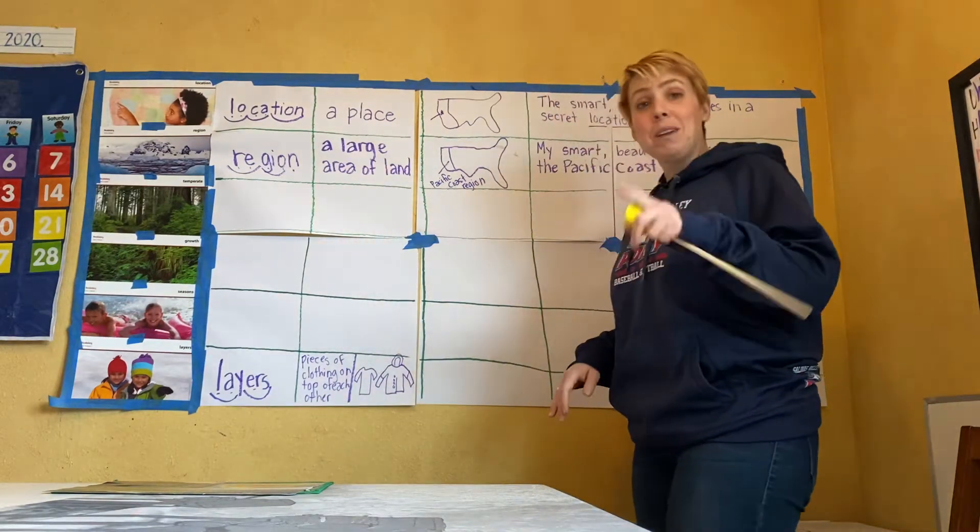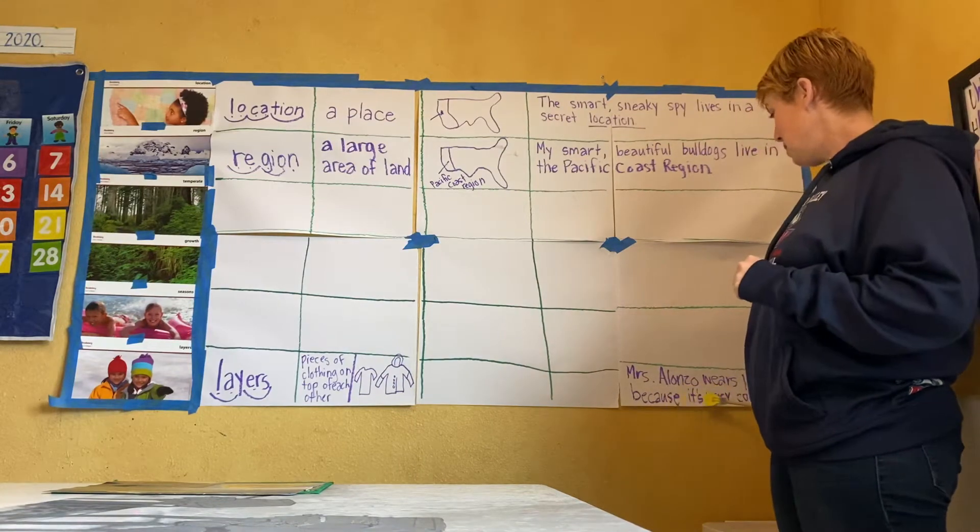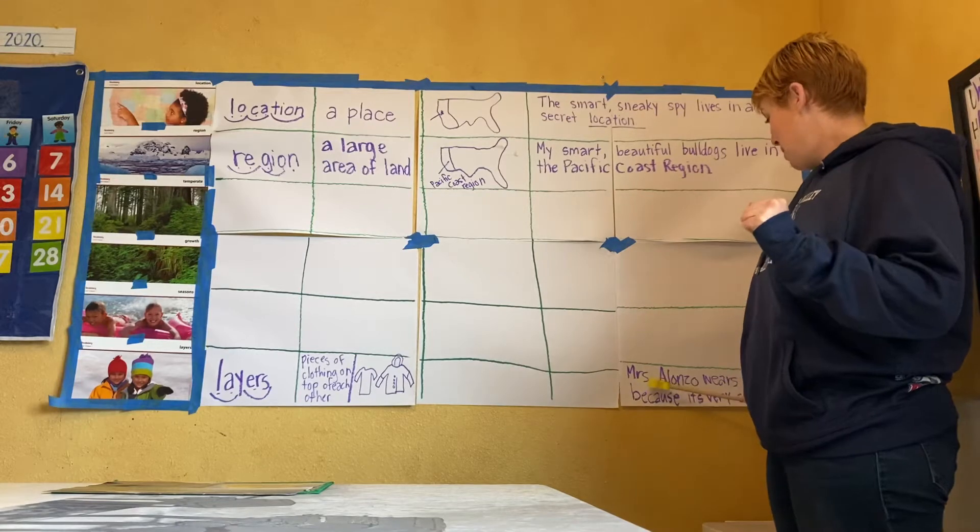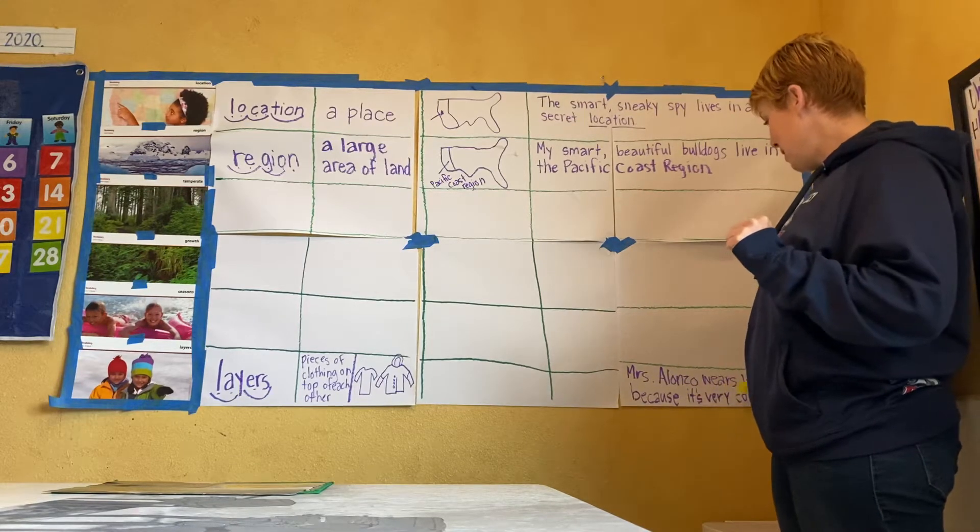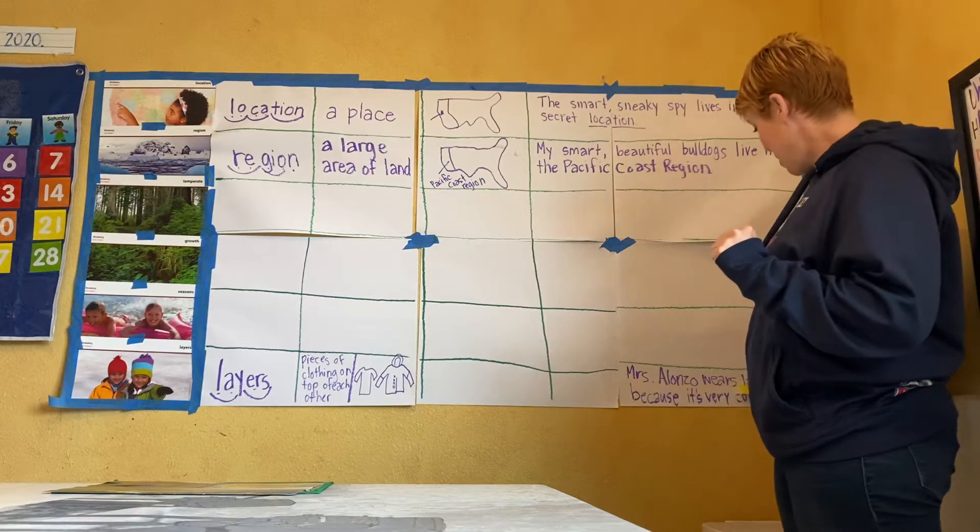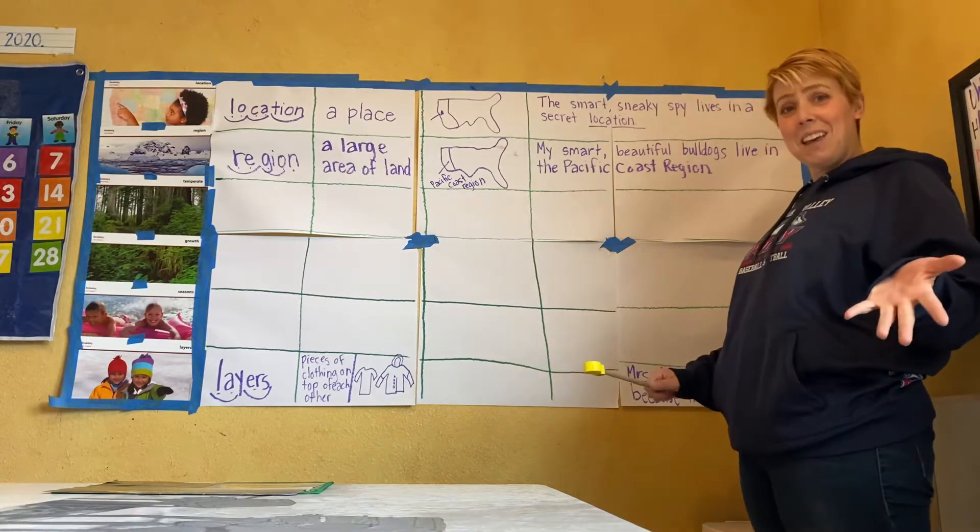So, Eli wrote a sentence about his teacher. He said, Mrs. Alonzo wears layers because it's very cold. And we wrote a song about it. We said, Mrs. Alonzo wears layers. Mrs. Alonzo wears layers. Mrs. Alonzo wears layers because it's very cold. Let's sing it together. Get ready.